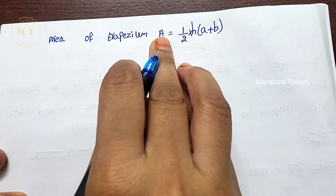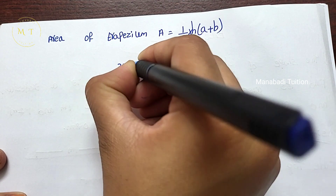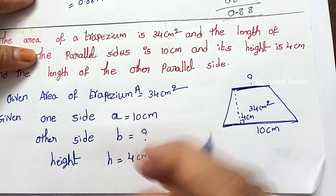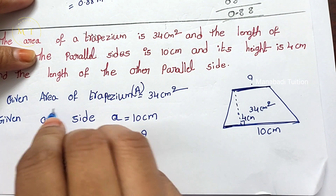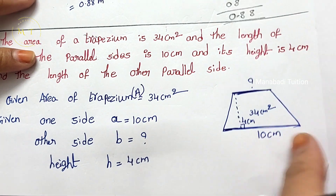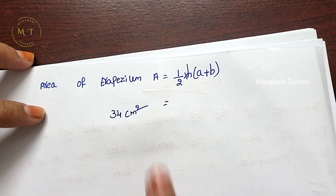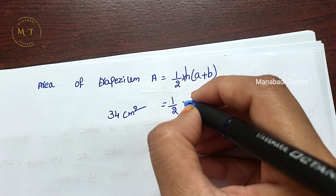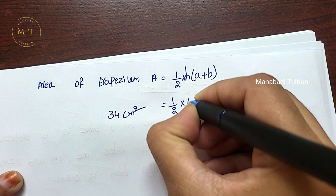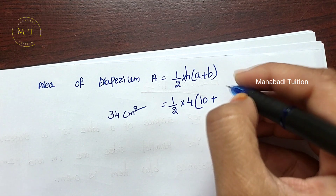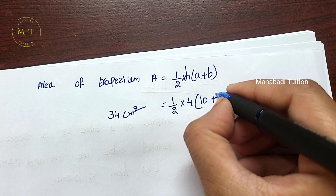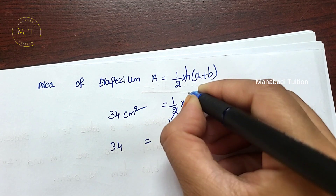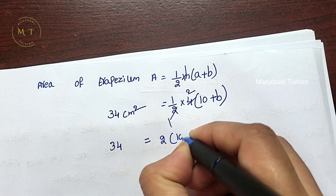The area of the trapezium is 34 square centimeters. We substitute the values: 1 by 2, H value is 4 centimeters, A value is 10 centimeters, and B is unknown. So we substitute: 34 equals 1/2 into 4 into (10 plus B).